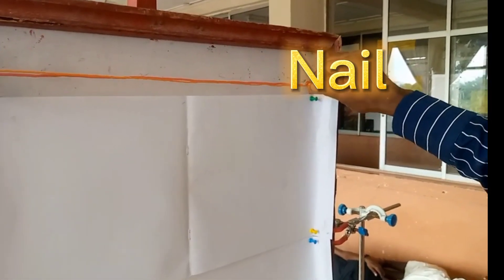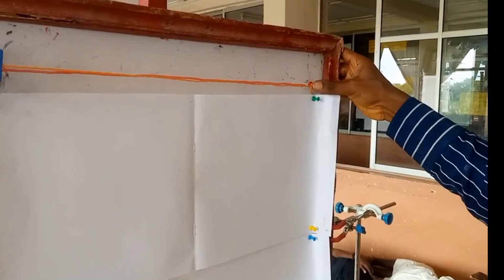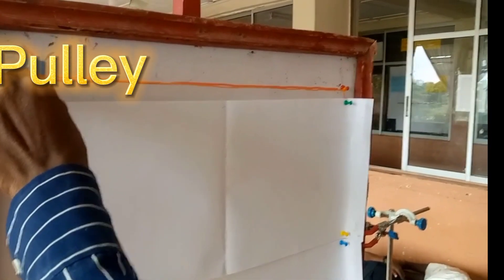This is the word thumbtack. Or you can use nail like I said. This one. Then this is my fixed pulley. This place.